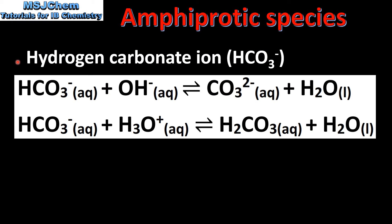Let's look at another example of an amphiprotic species: the hydrogen carbonate ion, HCO₃⁻. In the top reaction the hydrogen carbonate ion is donating a proton to the hydroxide ion, therefore it's acting as a Brønsted-Lowry acid. In the bottom equation the hydrogen carbonate ion is accepting a proton from the hydronium ion, therefore it's acting as a Brønsted-Lowry base.